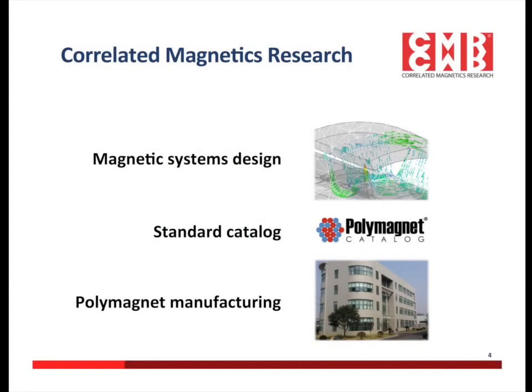Let me start by briefly discussing Correlated Magnetics. We see ourselves as doing three primary things. First, we use our new magnetization technology to design magnetic systems that we call polymagnets. Secondly, we've taken these magnetic systems and created standard parts. These standard parts are accessible to product designers through what we call the polymagnet catalog.